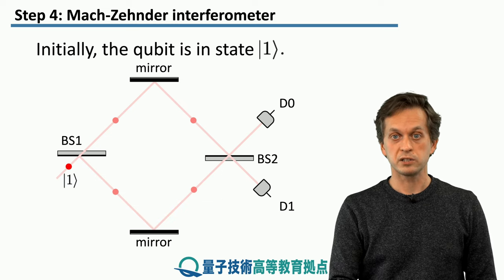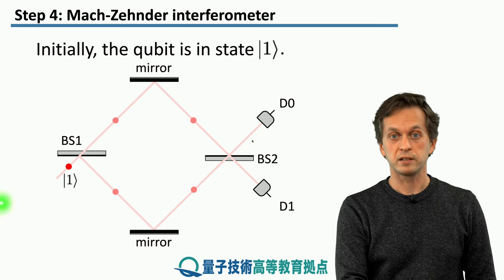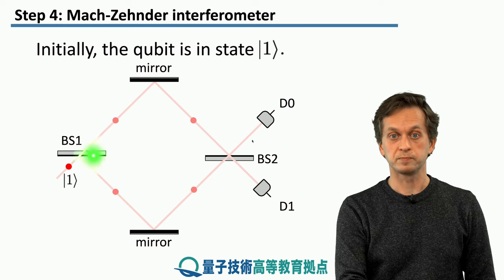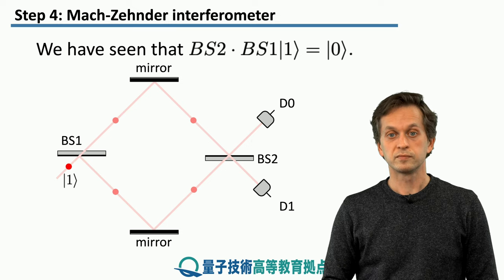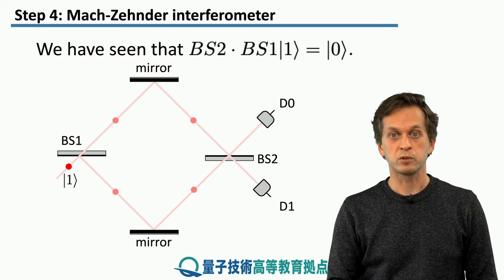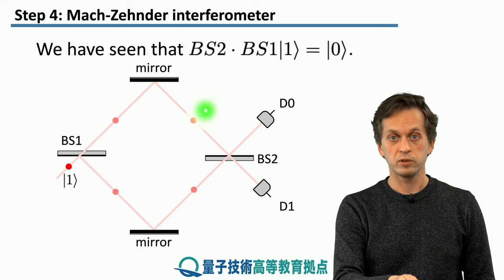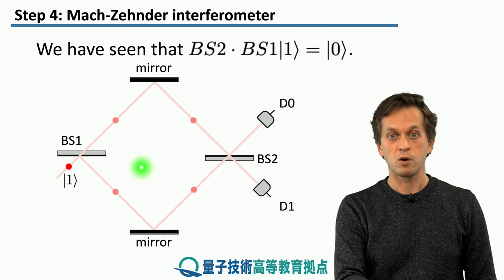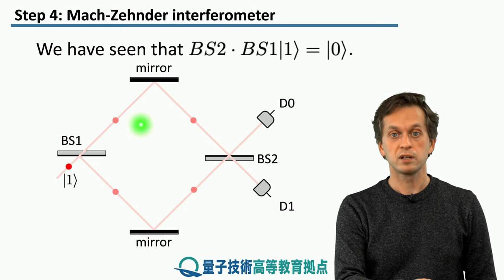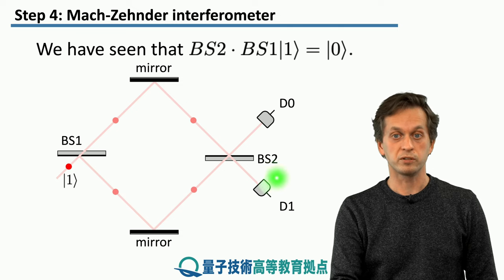So let's consider our initial state to be in state 1, meaning it enters our Mach-Zehnder interferometer from the bottom half. And in fact, now you see why we have called those previous transformations BS1 and BS2. They correspond to the mathematical description of how these beam splitters affect the probability amplitudes of our qubit.